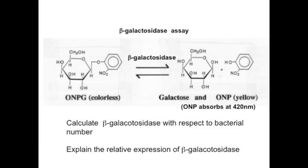The principle of the assay is that beta-galactosidase will break down the substrate ONPG into galactose and ONP. ONP has an absorbance at 420. Your job is to take the measurement of the beta-galactosidase assay and the concentration of the bacteria. It is important that you express the beta-galactosidase activity in terms of the number of bacteria in the cuvette, otherwise the amount of activity is rather meaningless.